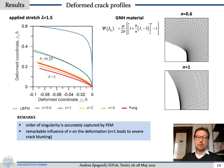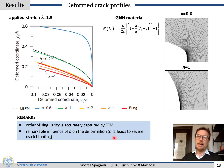This slide shows the deformed crack profiles as the strain hardening parameter N changes. There is a remarkable influence of N on the deformation, particularly when N is less than 1, where 1 is the case of the neo-Hookean material, and the blunting is very severe.